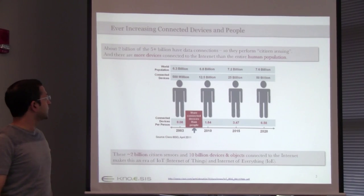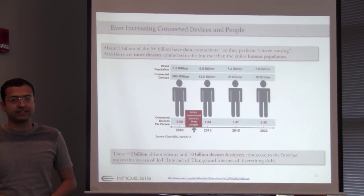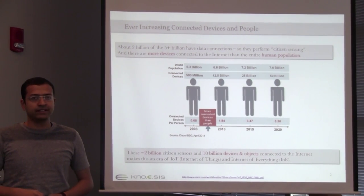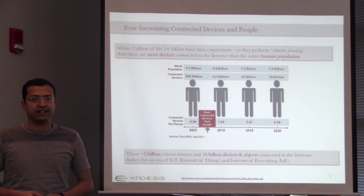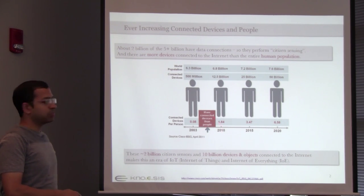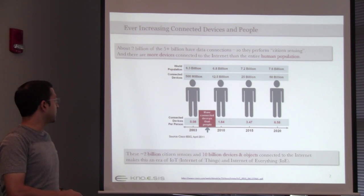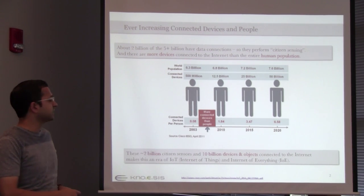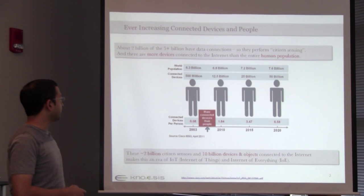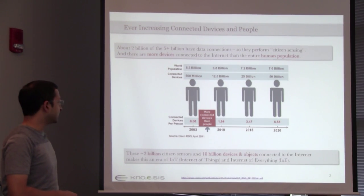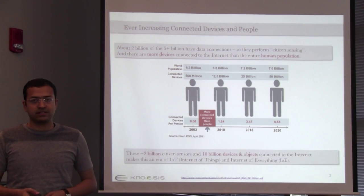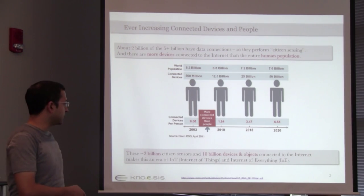Let me start with a motivating example. We have devices being connected and sensors being deployed everywhere. All these sensors and devices are connected, and the scale is so huge that we have surpassed the human population. There are more devices connected to the internet now than there are humans on the planet, and this trend is going to continue. We are moving beyond the internet of things to something called internet of everything.